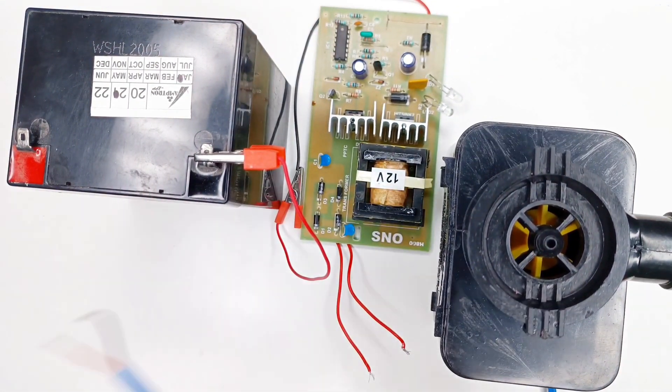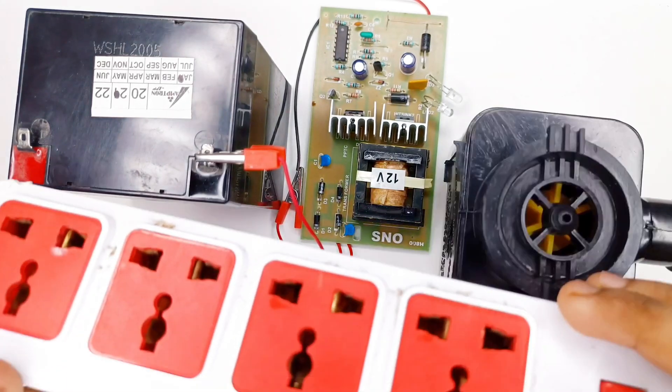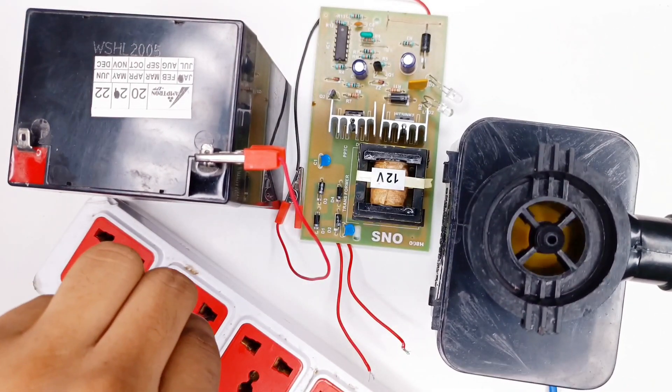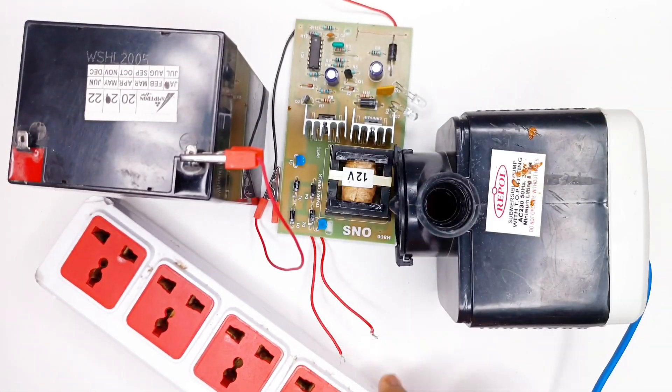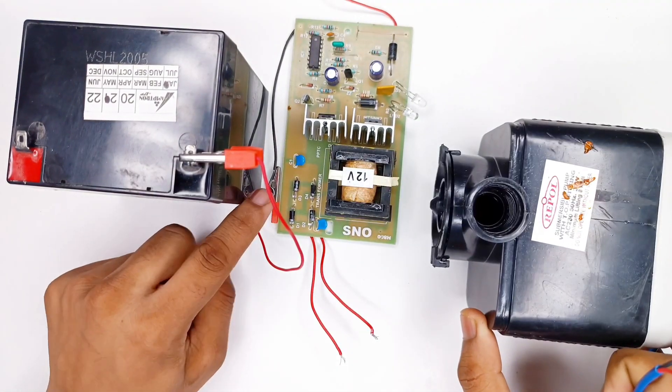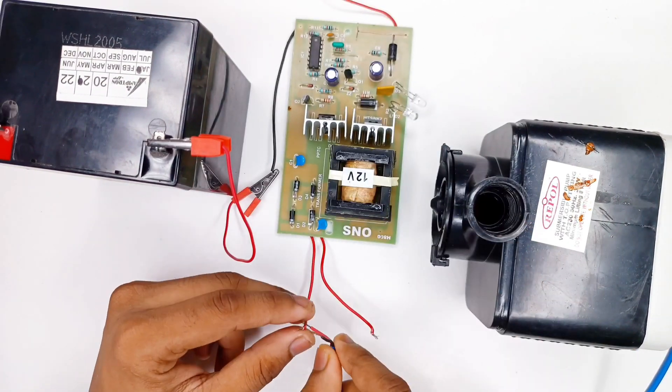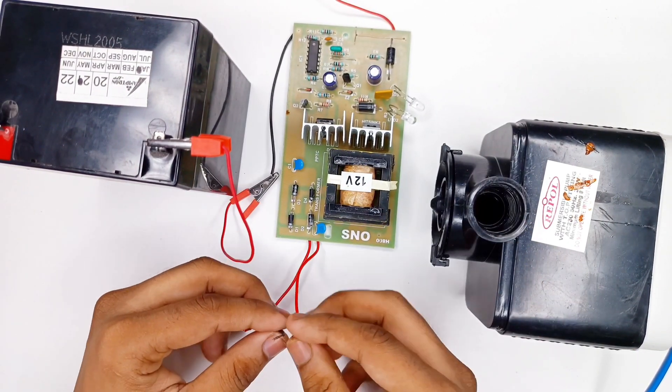Let's test if the motor is okay. Let's try to test this 30 watt AC water pump from the inverter circuit board.